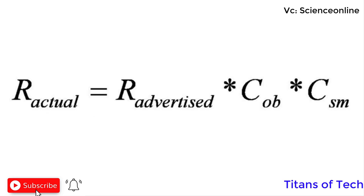Actual range equals advertised range times COB times CSM, where CSM is our safety margin coefficient. If COB is 0.9 and CSM is 0.9, then our actual range is 81% of the advertised range.